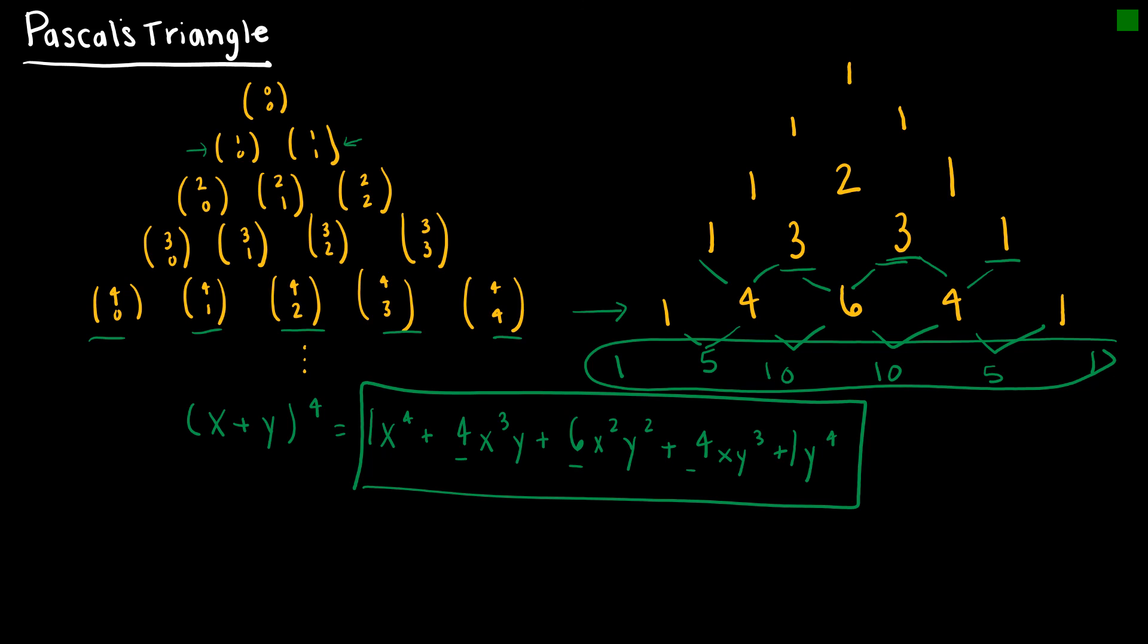We can see how that might be nice. If I wanted to take x plus y to the 5th, then I can easily say, well, that must be 1x to the 5th plus 5x to the 4th y plus 10x to the 3rd y squared plus 10x squared y to the 3rd plus 5xy to the 4th plus y to the 5th. And I didn't have to do any work. I just looked at Pascal's triangle and really just cheated using Pascal's identity. So that is where Pascal's triangle comes in very helpful.